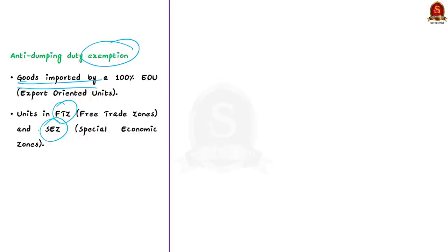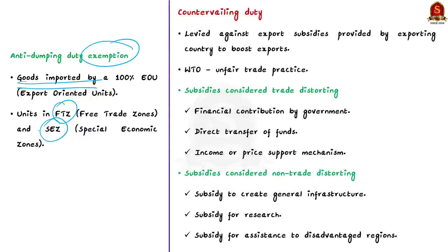When discussing anti-dumping duty, countervailing duty often causes confusion. Some countries provide subsidies to their exports to boost exports — these are called export subsidies. Under the WTO agreement, export subsidies are treated as unfair trade practice. To counter such subsidies, the importing country can levy anti-subsidy countervailing duty, which is what countervailing duty means in general.